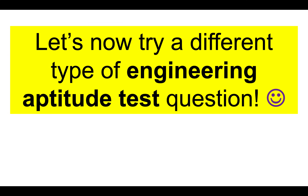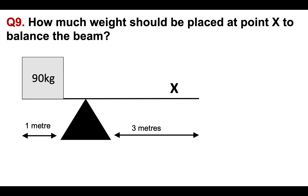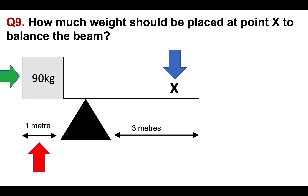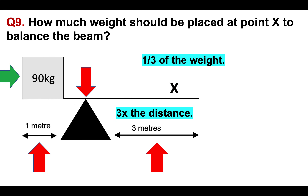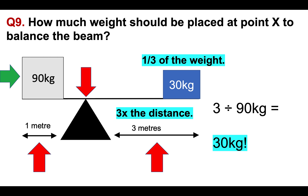Let's now try a different type of engineering aptitude test question. Question nine: how much weight should be placed at point X to balance the beam? We have a 90 kilogram weight on the left, with one meter from the fulcrum point on the left and three meters on the right. Since it is three times the distance, the weight is therefore a third — so 90 divided by 3 equals 30 kilograms. That's the weight needed to balance the beam.